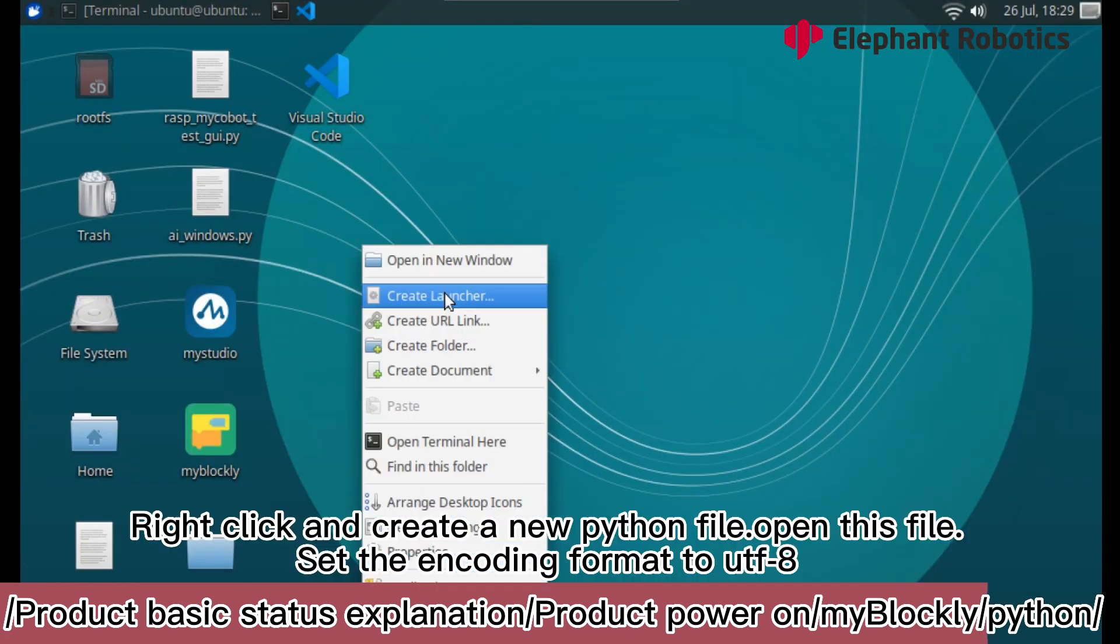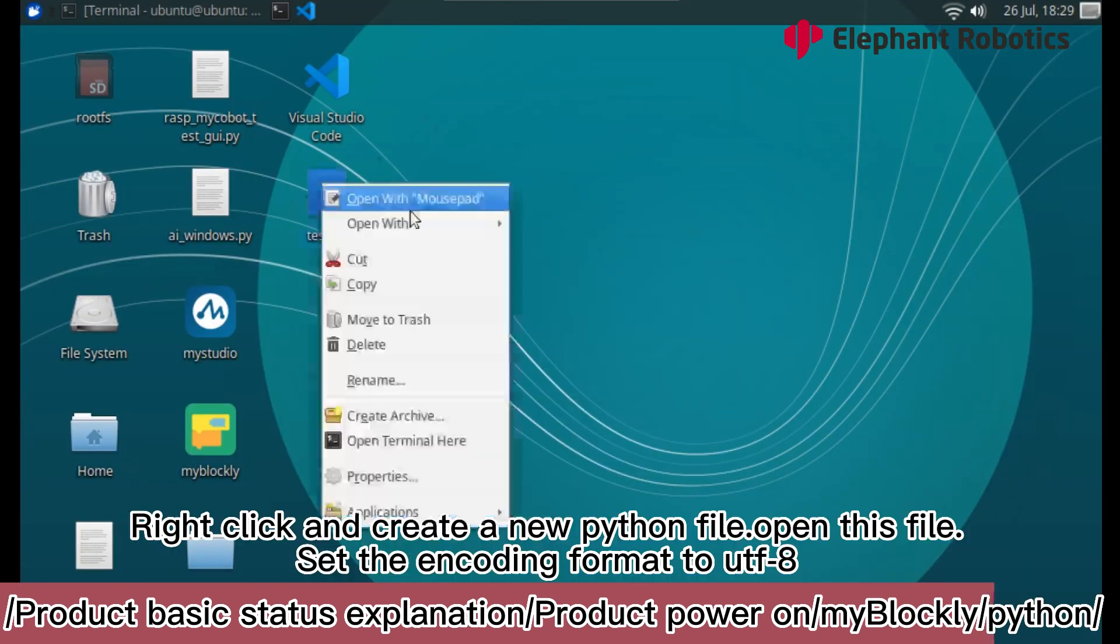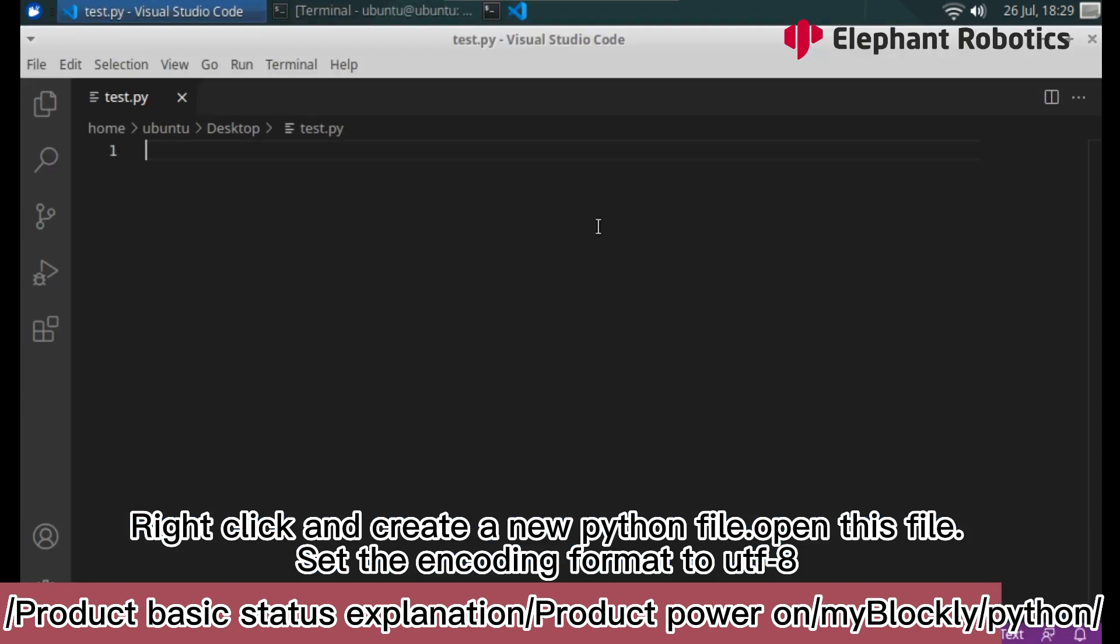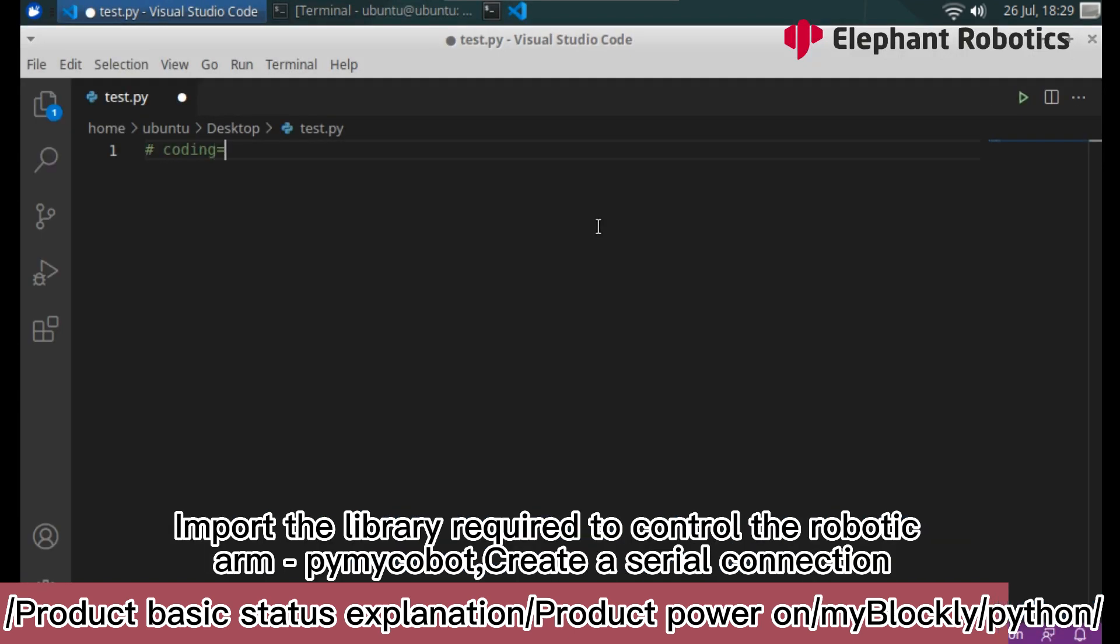Right click and create a new Python file. Open this file. Set the encoding format to UTF-8. Import the library required to control the robotic arm, pymycobot. Create a serial connection.